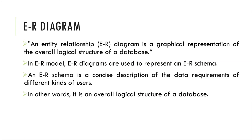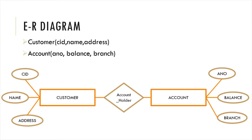In an ER diagram, an entity is represented using a rectangle, an attribute is represented using an ellipse symbol, and a relationship is represented using a diamond symbol. This is the basic ER diagram showing a customer and account relationship with their respective attributes. ER diagrams show the relationship between entity sets and the attributes of each entity.